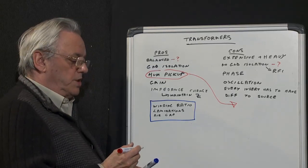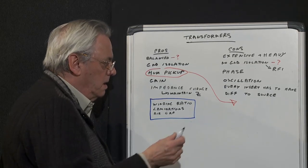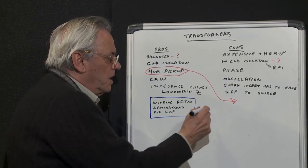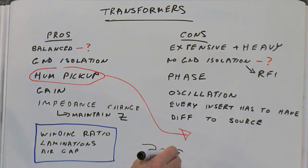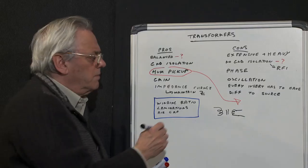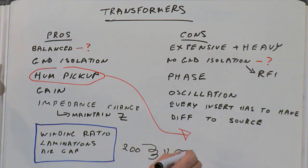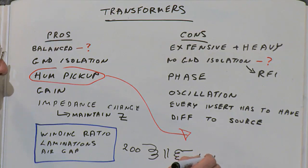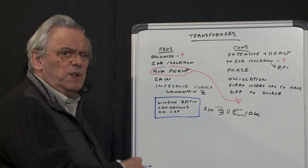By altering the ratio of the primary to the secondary, you can build up useful gain. For instance, if your microphone impedance is 200 ohms, you can easily build that up to 10k ohms in your transformer and get a very useful 34 to 40 dB worth of additional gain for free.